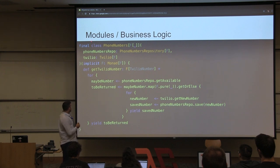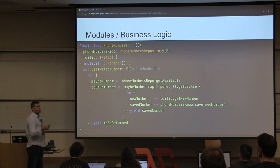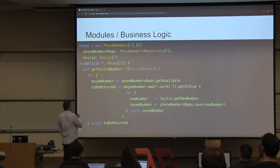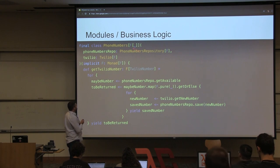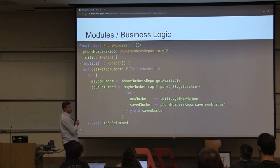After our interfaces — the things we need to do with the outside world — we have our business logic, or what you might hear called modules. A module is something that can depend on other modules or algebras, and because other modules and algebras are pure, this module itself will be pure as long as you follow the conventions. This phone numbers module still doesn't know what F is going to be, so we abstract over it, and we say we need some instance of our phone numbers repository for this F and some instance of our Twilio interface for this F.